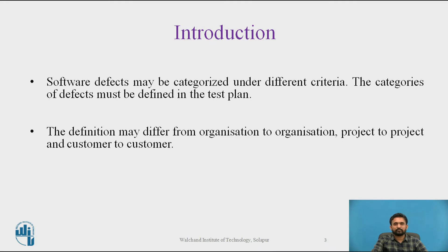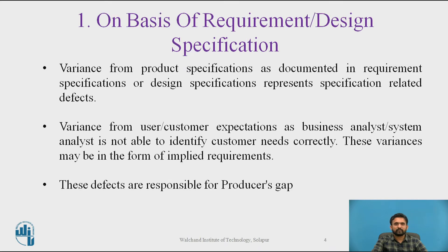Defect probability is a parameter that defines the possibility of an issue to occur and to be detected by the end user. On the basis of requirement and design specification, variance from product specification as documented in requirement or design specifications represents specification-related defects. Many times, project designers don't get a clear idea about each specific module and simply assume some requirements in the design phase.